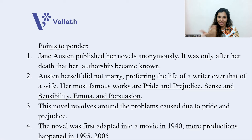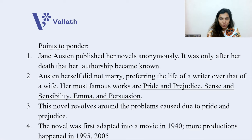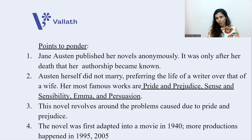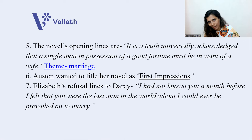A few points to ponder — learn them for your exam. First, Jane Austen published her novels anonymously, without stating her name; it was only after her death that her authorship became known. Second, Austen herself never married in life — she preferred the life of a writer over that of a wife or hostess. Her most famous works are Pride and Prejudice, Sense and Sensibility, Emma, and Persuasion. The novel has been adapted into movies in 1940, 1995, 2005, and so on.